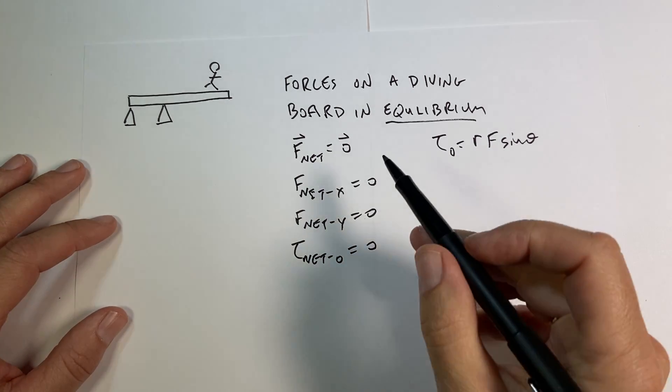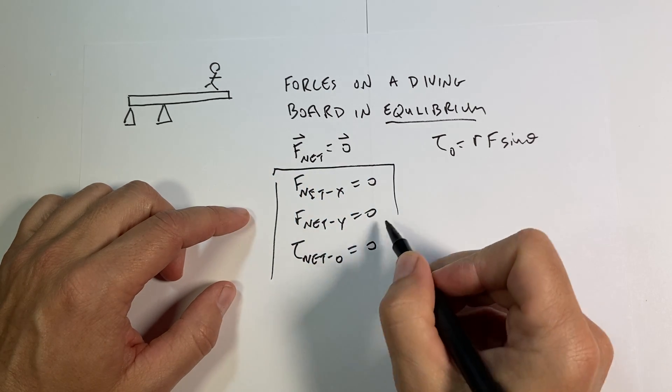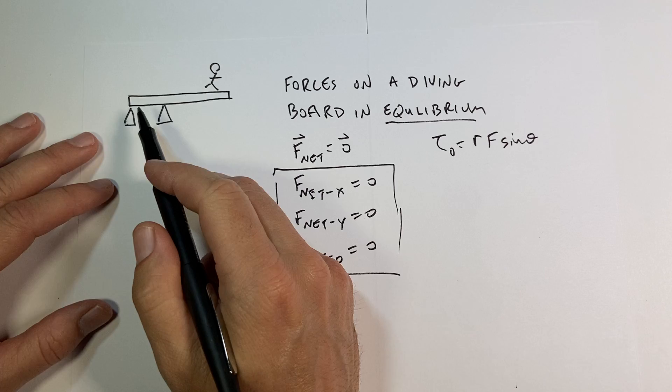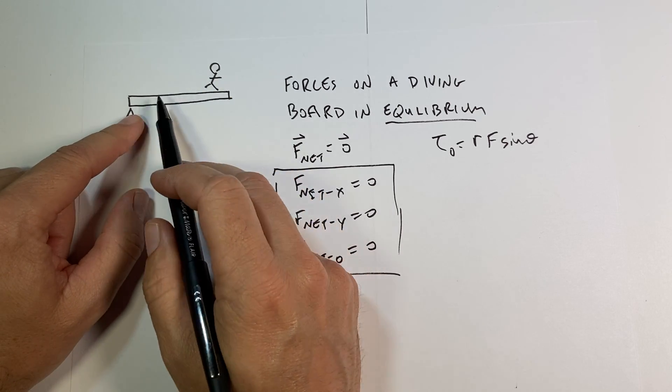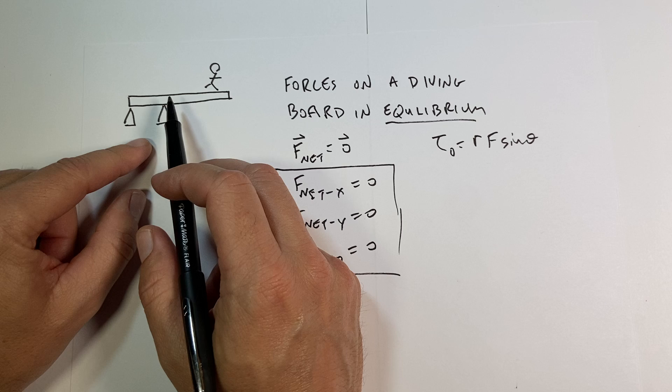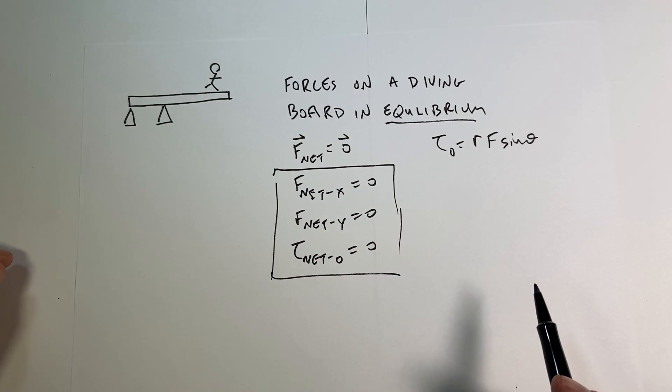Okay, so in this case we actually get three equations, assuming this is a two-dimensional problem, which it is. So in the case of the diving board, what are all the forces acting on the diving board? So there's actually four forces acting on the diving board.